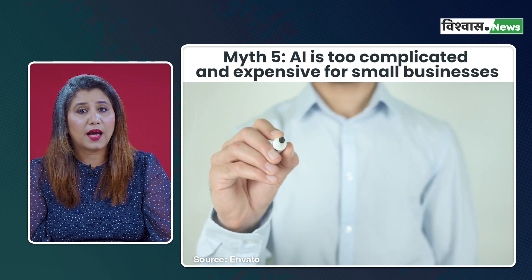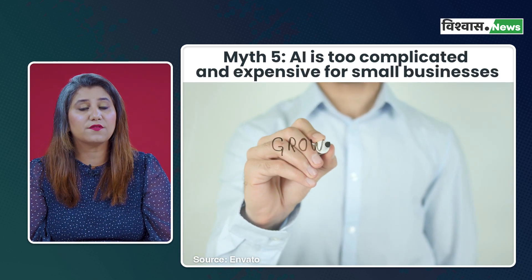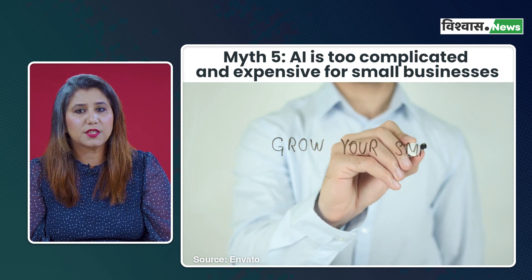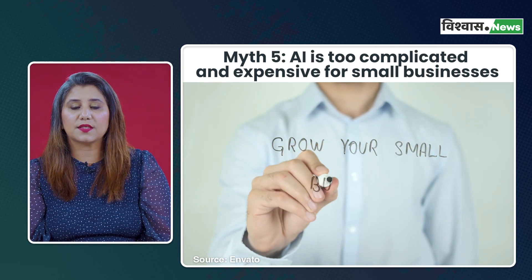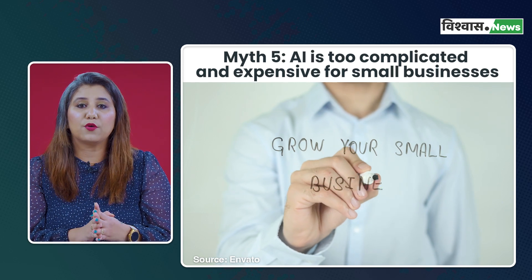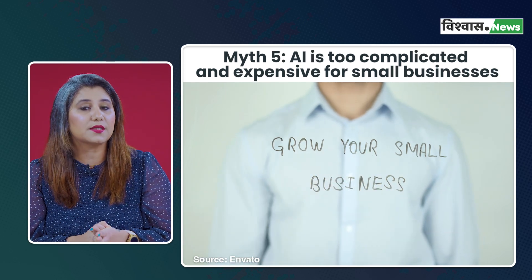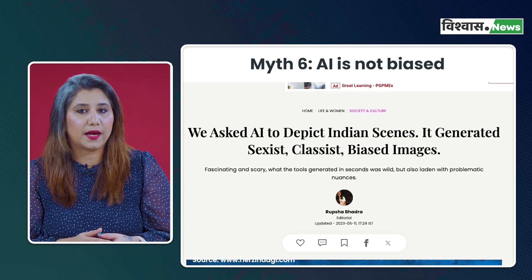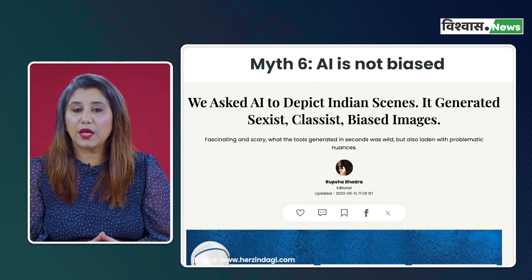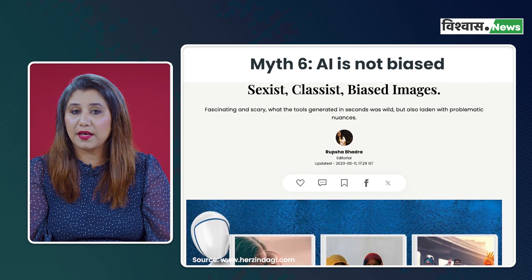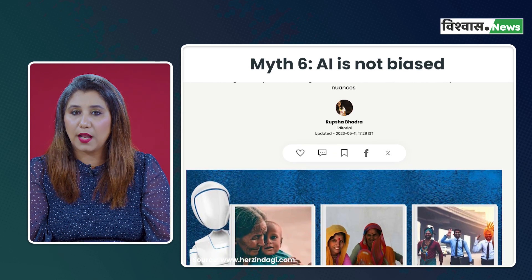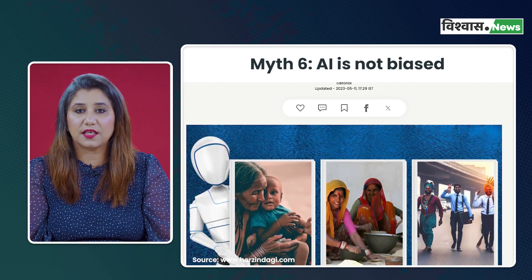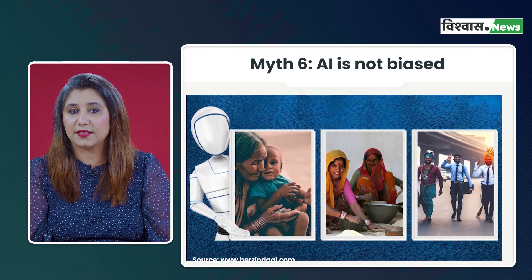Myth four: AI is a black box. Some think AI is incomprehensible, but in reality efforts are made to make AI more transparent and interpretable, ensuring accountability and fairness. Myth five: AI is too complicated and expensive for small businesses. Not just big tech — AI can also help small businesses to automate tasks, improve customer service and make better decisions. Myth six: AI is not biased. AI systems are trained on data, and if that data is biased, the AI system will be biased as well. The responsibility lies with the designers, developers and users of AI systems.